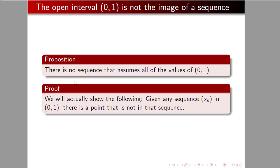Here we're going to prove that the open interval is not the image of a sequence. The way we state this in the proposition is by saying there is no sequence that assumes all of the values of 0, 1. We will actually show the following. Given any sequence x n in 0, 1, there is a point that is not in that sequence.